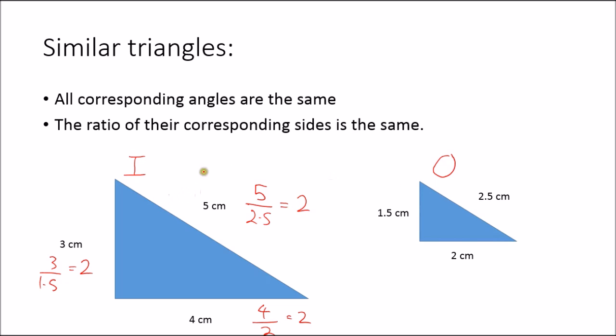Now obviously if it was the other way around, and we were going from a big object to a small image, these ratios would just be flipped the other way. So it would be the size of the image over the size of the object.